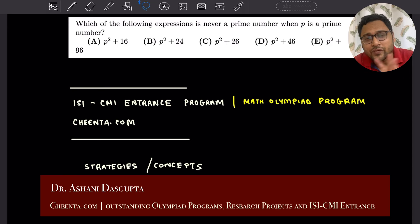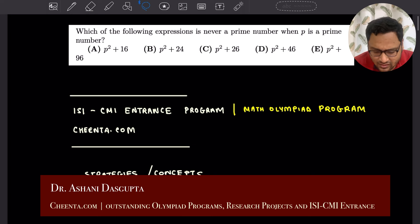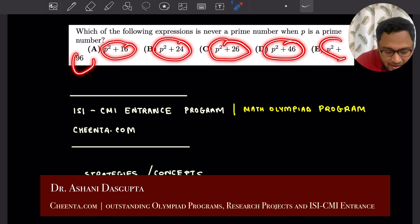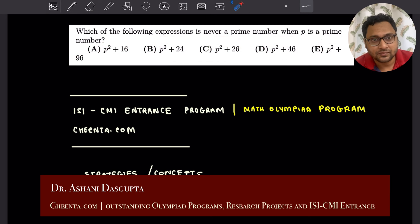Hello everyone. We were working on this problem in our American Math Competition Review Course. It says that P is a prime number and we want to find out which one of these expressions can never be a prime number. This problem is from American Math Competition 10, one of the mathematical Olympiads held in the United States.